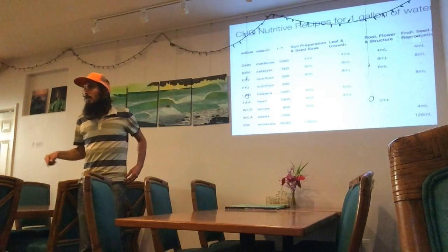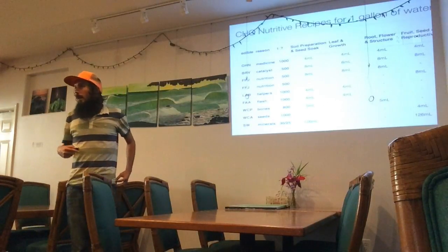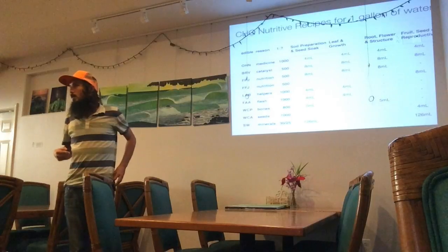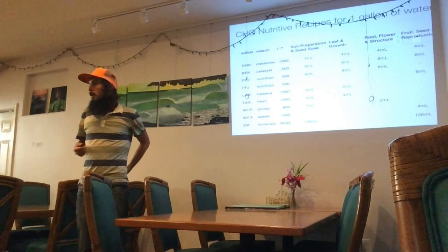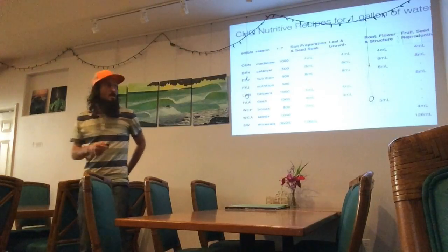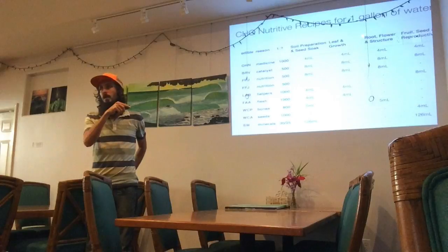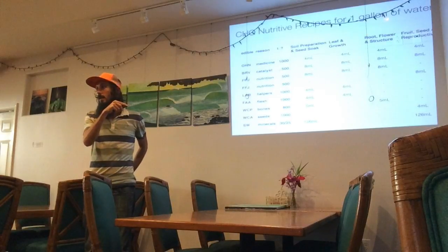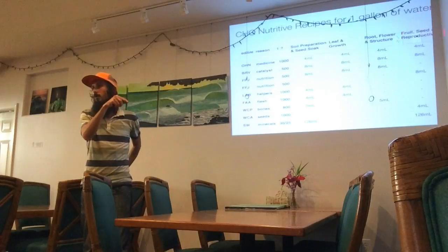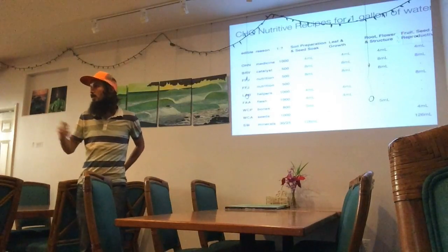If you follow Master Cho's system, he calls these Type 2, Type 3, and I find that confusing because 'Type 2' doesn't tell you what it means. But if I call it 'leaf and growth' or 'root structure,' that gives you a much better idea than just Type 2, Type 3.